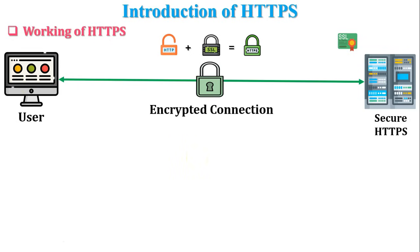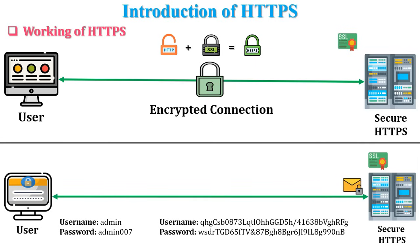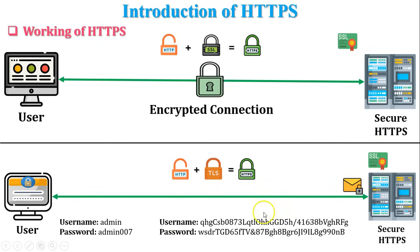For example, a user wants to access a secure server and enters a username and password into the browser — say, username 'admin' and password 'admin007'. When the user submits these credentials, they are sent to the server in encrypted form, so no one can get the real username and password. For HTTPS to be implemented, an SSL certificate is added on the server side. SSL certificate is a piece of code configured with the server. When HTTP is used with TLS or SSL, it is called HTTPS.